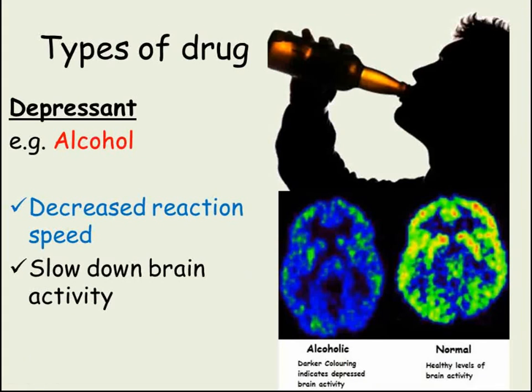Our second type of drug has the opposite effect to stimulants. Depressants affect us by slowing down reactions, increasing reaction times. Alcohol is an example of a depressant. Because alcohol makes you take longer to react to a stimulus, this is why it's illegal to drive with alcohol in your blood above a certain level. Depressants work by slowing down brain activity, increasing the time taken for messages to pass on to the effectors around the body.